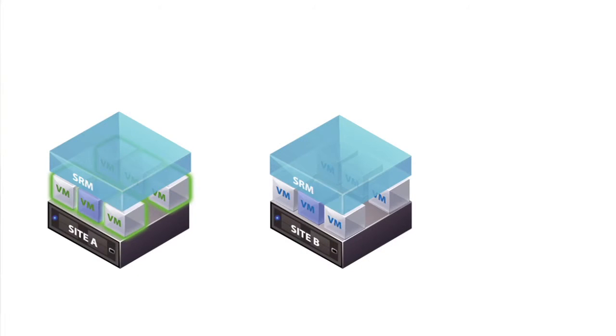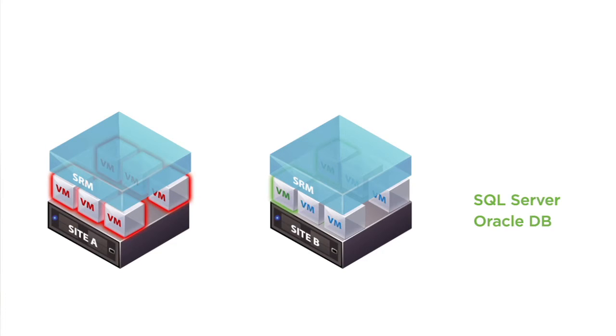SRM was originally built for disaster failovers, and that is of course the most critical use case. This is when a site goes down and VMs need to be migrated as fast as possible to a secondary site. SRM automates either a full or partial site recovery and does the failover as fast as possible to recover business services.